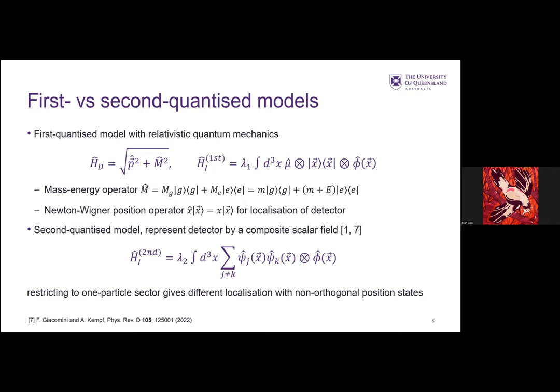The perhaps more difficult thing, or the other nuanced point to make, is that in relativistic quantum mechanics, one does not have a clear notion of a position operator. And so one has to make a decision on how exactly to localize the detector. For a detector with no internal structure besides the two energy levels, it's fairly straightforward. And you can take the same position operator as found in the non-relativistic case, which is the Newton-Wigner position operator, where it has some eigenstate and eigenvalue, and everything's nicely orthogonal and localized.